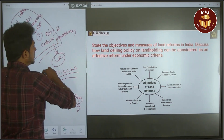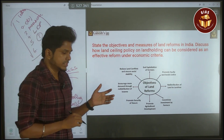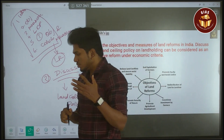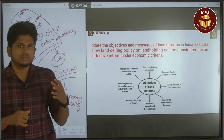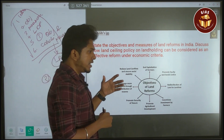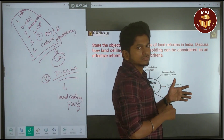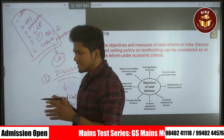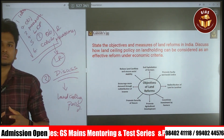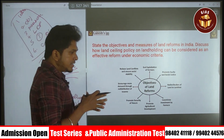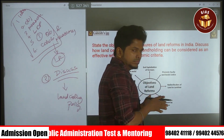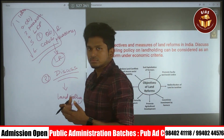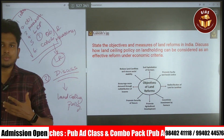This question was asked in 2023. Land reform was carried out after independence because at that time major landholding rested with the zamindars, jagirdars, and mahalwaris — they held most of the land. Most farmers were landless; they had no land to do farming.